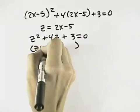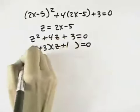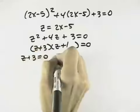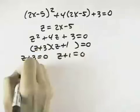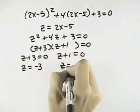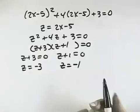Factoring this, I get z plus 3 times z plus 1 equals 0. I can set each of these factors equal to 0. Subtracting 3, I get z equals negative 3. And subtracting 1, I get z equals negative 1.